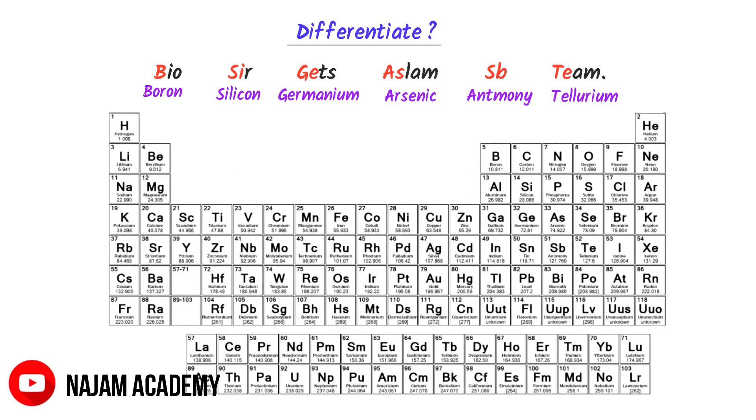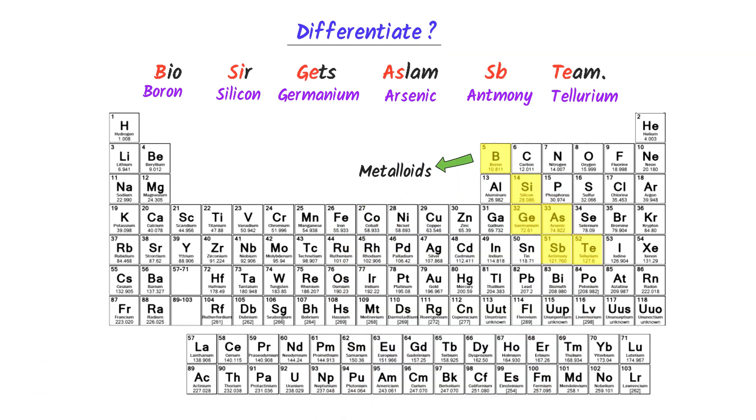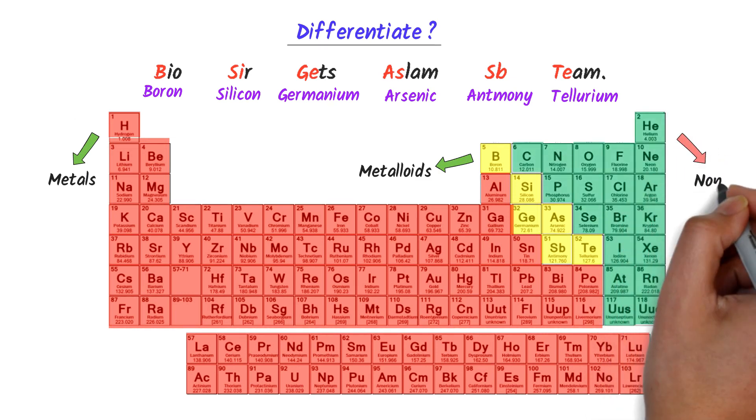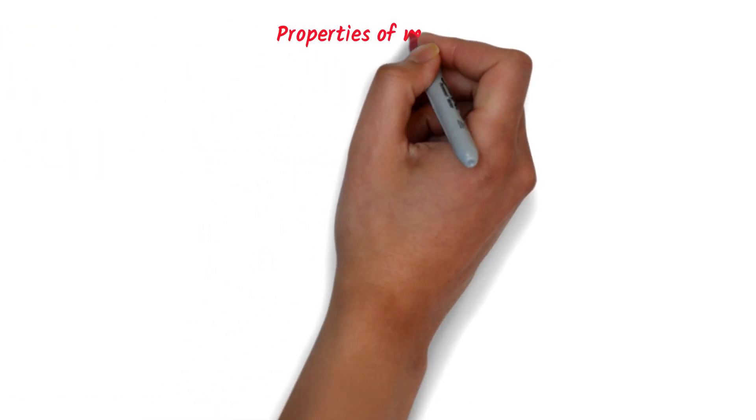Thus, I highlight all these 6 elements in the periodic table. Now listen carefully. At the left side of the metalloids, all these elements are metals. While at the right side of the metalloids, all these elements are nonmetals. So using this trick, we can easily recognize metals, metalloids and nonmetals in the periodic table.